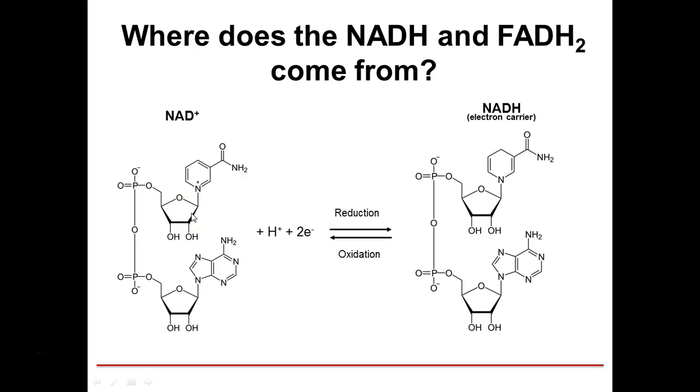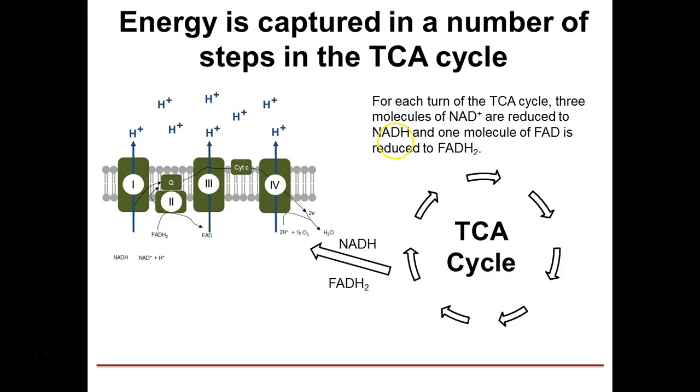We're going to need to reduce this NAD+ to NADH in some way. The TCA cycle is set up to produce NADH to drive that reaction. For each turn of this TCA cycle, NADH molecules are produced.